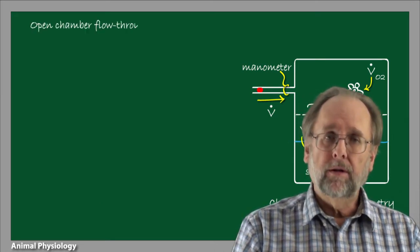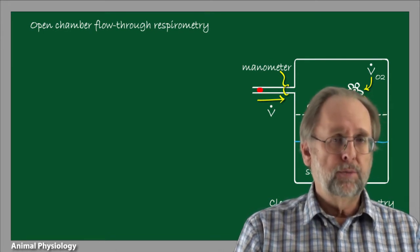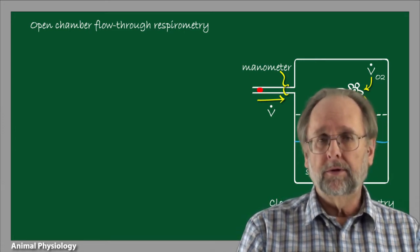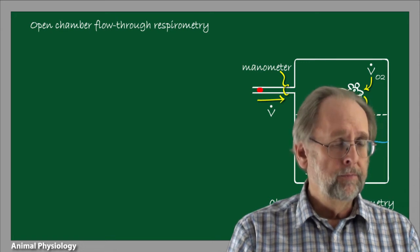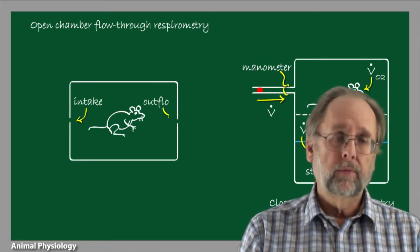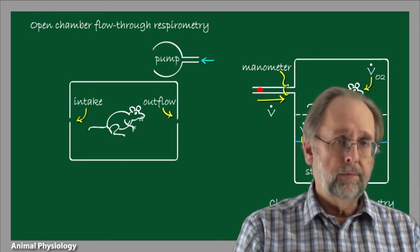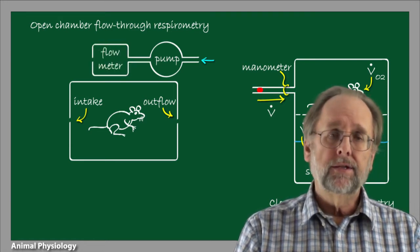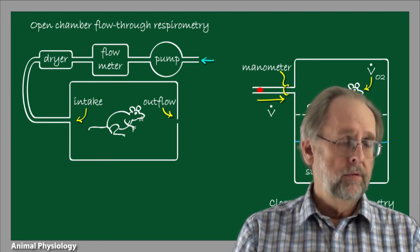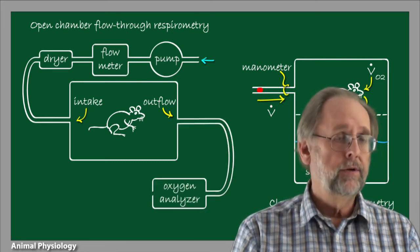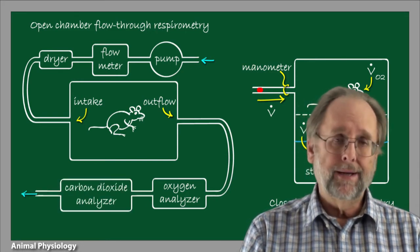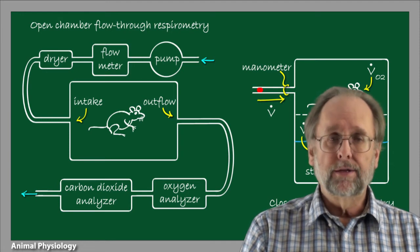Another method, known as open chamber flow-through respirometry, largely gets around this problem. This method is a bit more technologically complex, but the principle is quite simple. Again, we start with an animal enclosed within a chamber open at two ports. Air is made to flow through the chamber with a pump, which connects to a flow meter and then to something to dry the water vapor out of the air. Downstream from the chamber, air flows through a device measuring oxygen concentration in the outflowing air, then sequentially into a device measuring carbon dioxide concentration, and the air is then exhausted from the system.